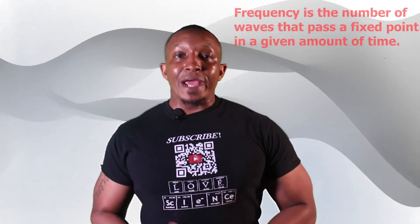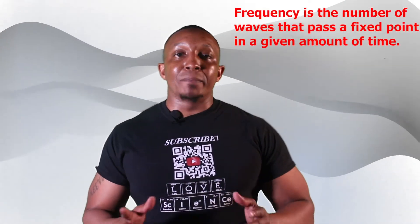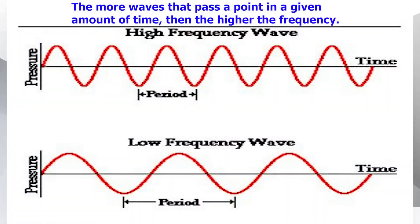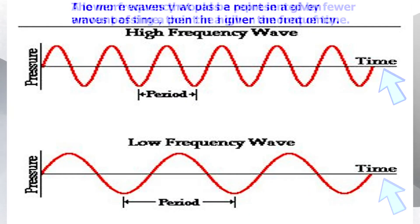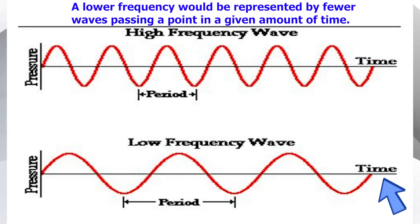Frequency is the number of waves that pass a fixed point in a given amount of time. The more waves that pass a point in a given amount of time, then the higher the frequency. A lower frequency would be represented by fewer waves passing a point in a given amount of time.